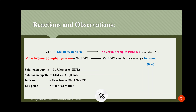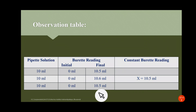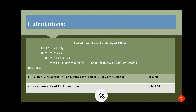The observations: the solution in the burette is 0.1 molar approximate EDTA solution; in the pipette is 10 ml of 0.1 molar zinc sulfate; indicator is Eriochrome Black T (EBT); endpoint is wine red to blue. In the observation table, the pipette solution taken is 10 ml. The constant burette reading obtained is 10.5 ml, appearing twice, confirming 10.5 ml as the constant reading. We now calculate the exact molarity of EDTA.